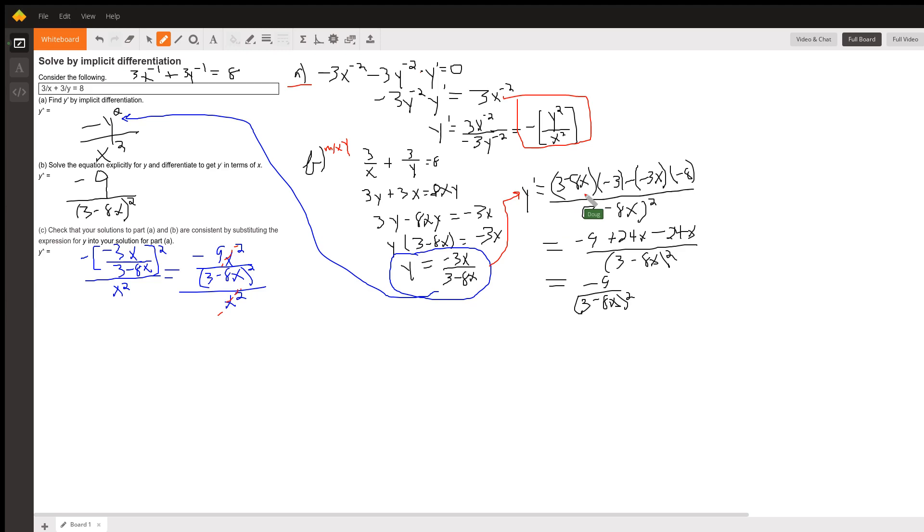So it's the denominator times the derivative of the numerator minus the numerator times the derivative of the denominator all over the denominator squared. That numerator simplifies to a minus 9.